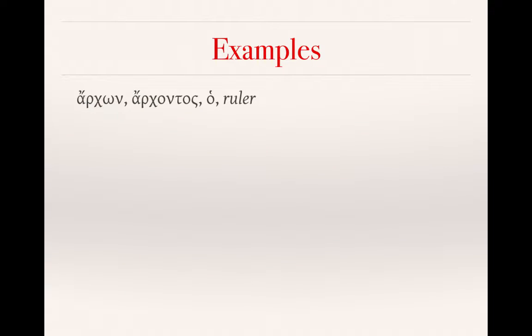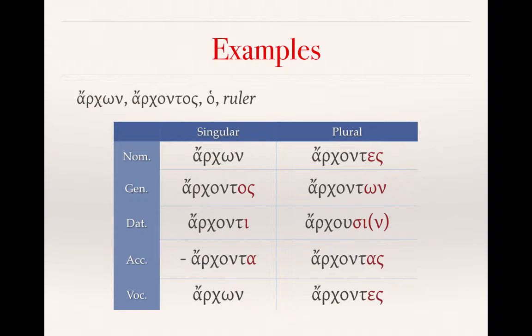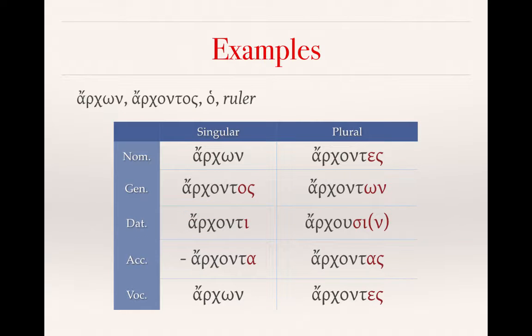Let's start with some basic examples of these third declension nouns. The first one is archon, archontos — ho, or ha, archon, tou archontos — which means ruler. It's a masculine noun, and the only way that we know it's masculine is because of that definite article. Here are the forms: archon, archontos, archonti, archonta, archon, archontes, archonton, archousin, archontas, archontes. You can see that the genitive singular gives us the basis for all but the dative plural forms — you see the ont- stem in the middle and then the endings added.